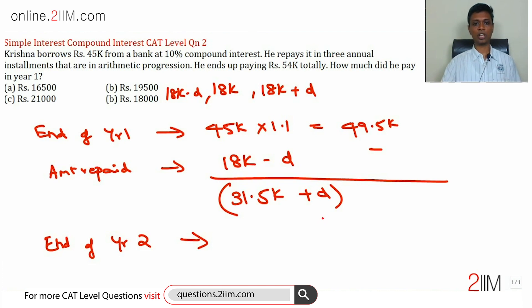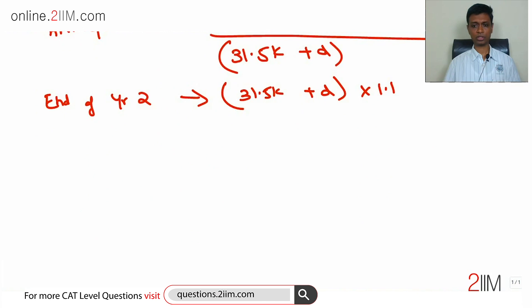That would be this 31.5k plus D × 1.1. Same idea: 31.5k plus D × 1.1. I'm just going to scroll this down so we can follow. So 31,500 plus D × 1.1 is the amount he will have to pay at the end of year two.